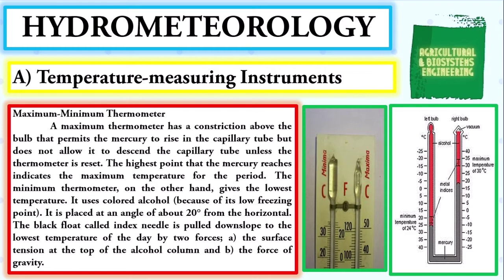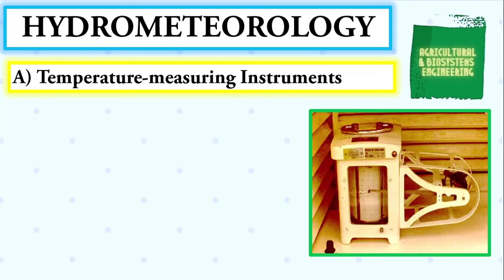The minimum thermometer gives the lowest temperature. It uses colored alcohol because of its low freezing point, and is placed at an angle of about 20 degrees from the horizontal. The black float called the index needle is pulled downslope to the lowest temperature of the day by two forces: the surface tension at the top of the alcohol column, and the force of gravity.